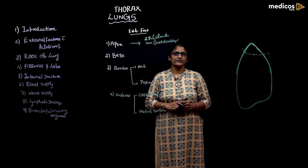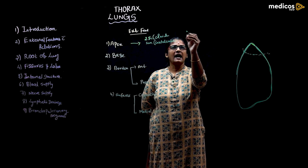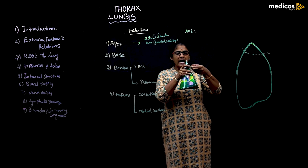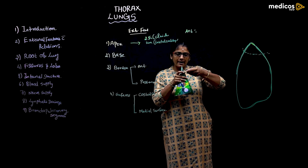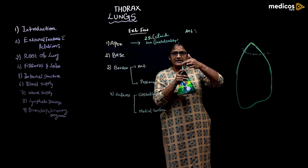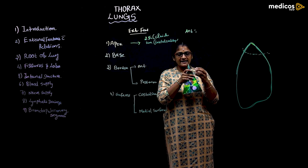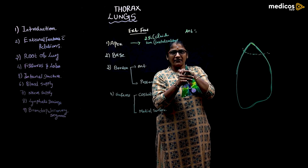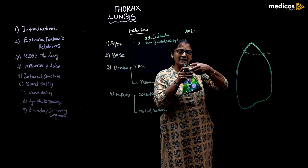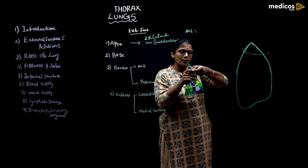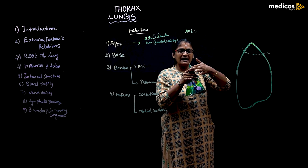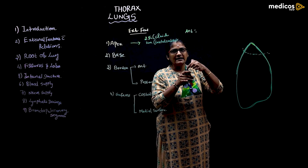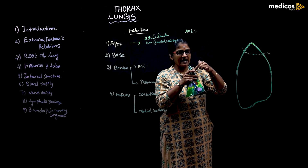The relations of the apex of the lung: anteriorly it is related to the subclavian artery and the scalenus anterior muscle. The anterior border is sharp and above the first rib. Anteriorly there is the subclavian artery with the scalenus anterior muscle.